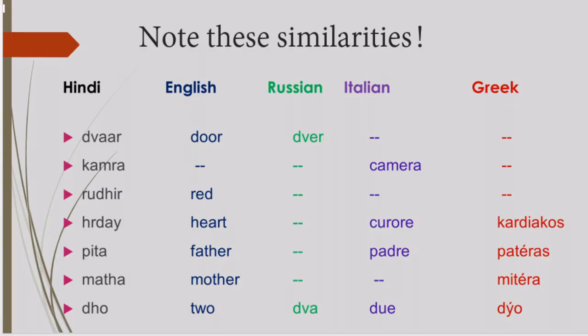Now note these similarities. I have a list of words from Hindi, from English, a couple of words from Russian, a few words from Italian and a few from Greek. In Hindi, there is the word 'Dwar.' We have 'Dwaraga,' we have 'Dwara' — basically the meaning of Dwar is door. In English we have 'door,' and in Russian there is 'dvar.'